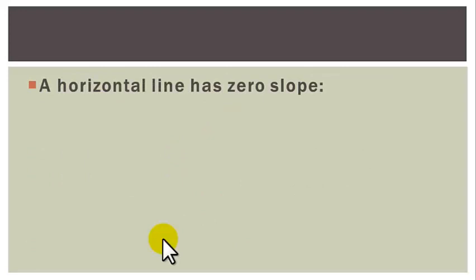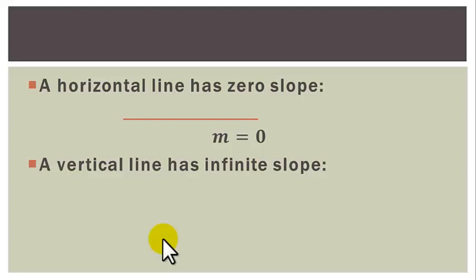A horizontal line has zero slope — this line has slope m equal to 0. While a vertical line has infinite slope — the slope of this line is m equal to infinity.